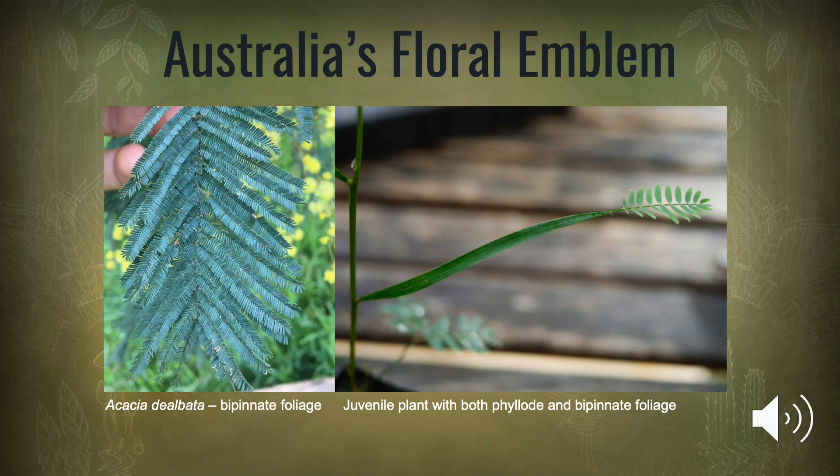While bipinnate leaflets are considered Acacia's true leaves, many Australian Acacias have evolved to utilize flattened out or modified petioles, known as phylodes, to perform the function of a leaf, with most of these species losing their true leaves in the early stages of development.